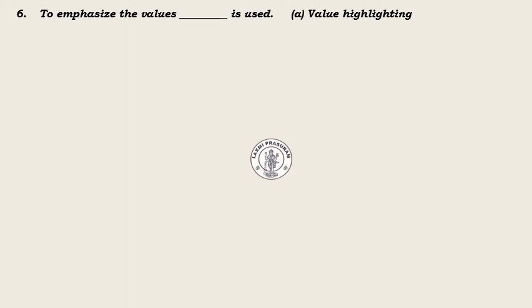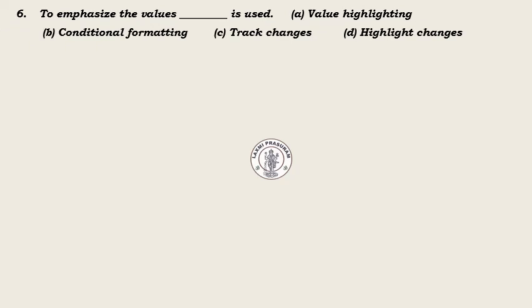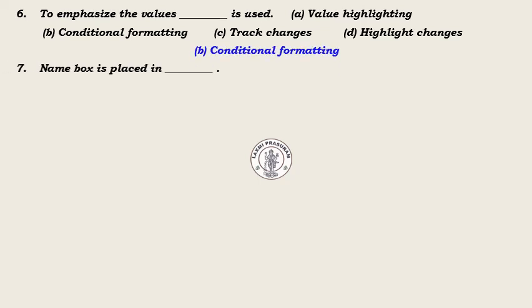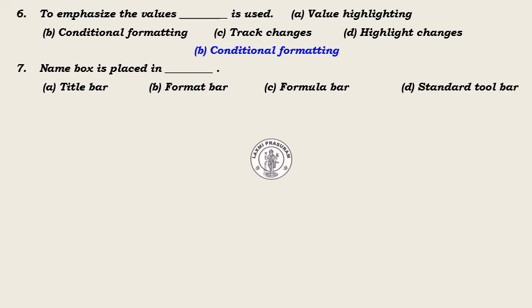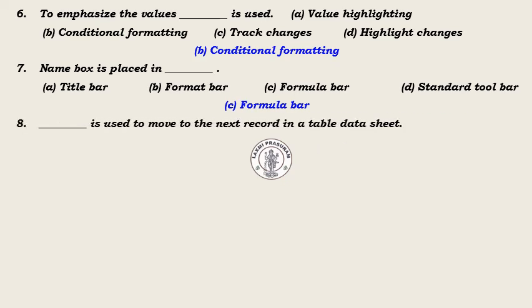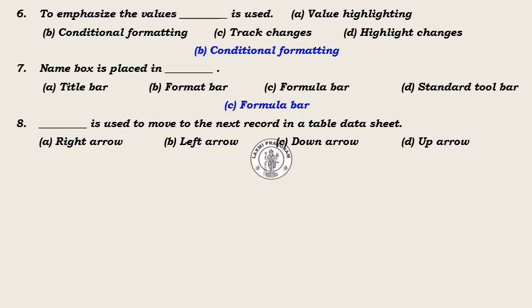Next five questions — sixth question. Question 6: To emphasize the values, dash is used. Options: Value highlighting, Conditional formatting, Track changes, Highlight changes. Answer: Conditional formatting. Question 7: Name box is placed in dash. Question 8: Dash is used to move to the next record in a table data sheet. Options: Right arrow, Left arrow, Down arrow, Up arrow. Answer: Down arrow.